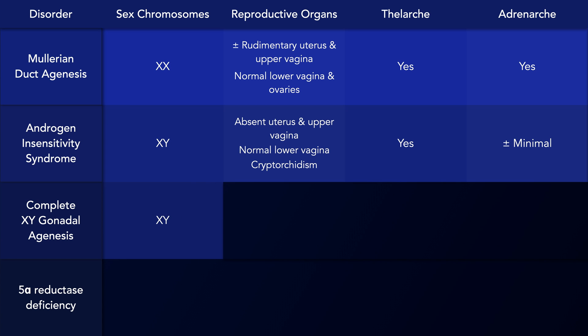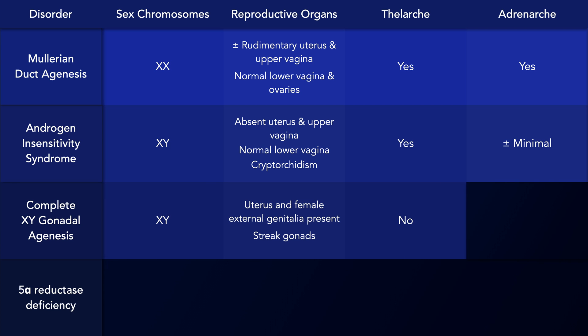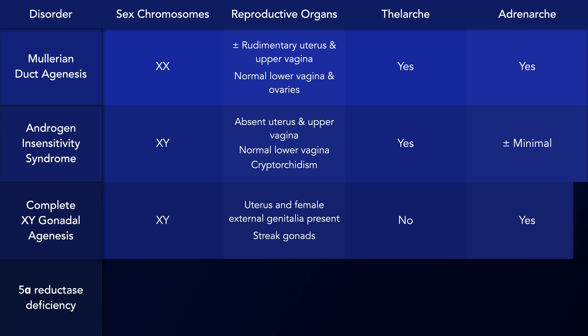With complete XY gonadal dysgenesis, the person's karyotype is 46XY. They develop a uterus and external female genitalia, but with streaked gonads. Thelarche does not occur, but pubic hair does develop during puberty.